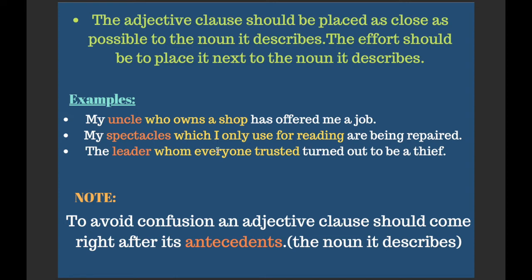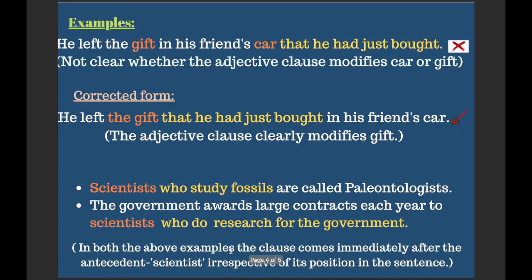The adjective clause should be placed next to the noun it describes. To avoid confusion, an adjective clause should come right after its antecedent — the noun it describes. Consider this example: 'He left the gift in his friend's car that he had just bought.' Here, the adjective clause 'that he had just bought' is unclear — it is not certain whether it is defining 'car' or 'gift,' since both are nouns.